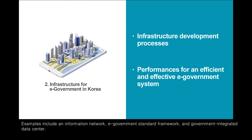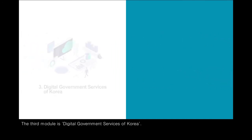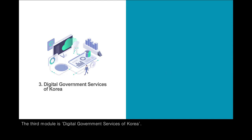Examples include an information network, e-government standard framework, and government integrated data center. The third module is Digital Government Services of Korea.